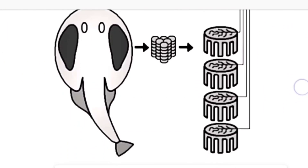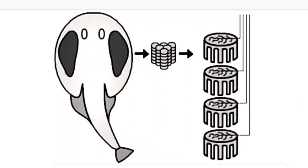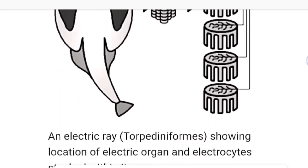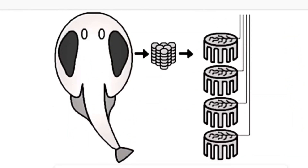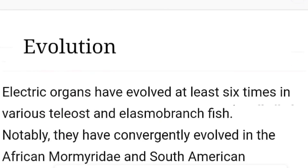Now let's deal with the diagram of the electric organ. This shows the electric ray called the torpedo, with the location of the electric organ and the electrocytes which are stacked. These stacks of electrocytes are present here, and we call them electric cells.